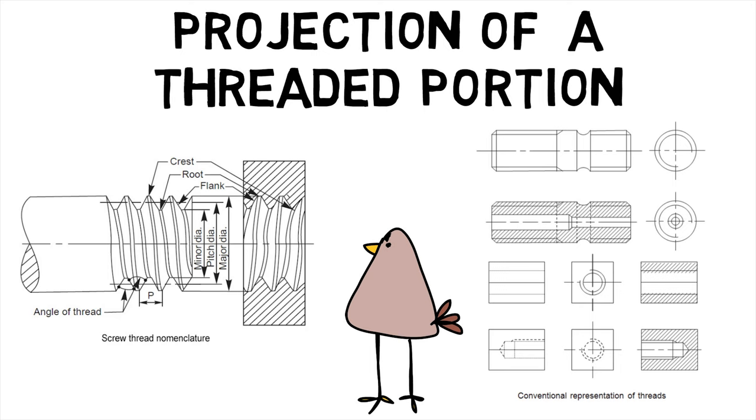For hidden screw threads, the crests and roots are indicated by dotted lines. For threaded parts in section, hatching should be extended to the line defining the crest of the thread.